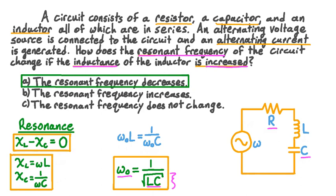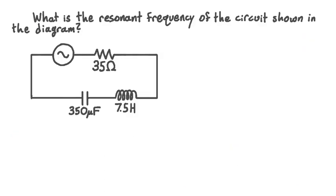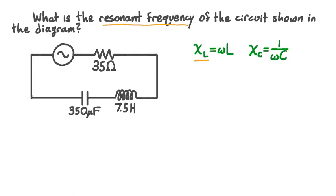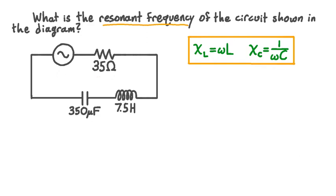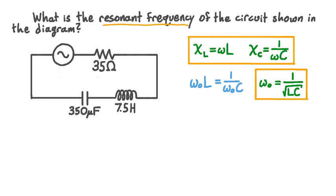Let's now work through a more quantitative example. What is the resonant frequency of a circuit consisting of an alternating voltage source connected to a series combination of a 35-ohm resistor, a 7.5-henry inductor, and a 350-microfarad capacitor? On resonance, inductive and capacitive reactances are equal: ω₀L = 1/(ω₀C). Solving for ω₀ gives the resonant angular frequency equal to 1 divided by the square root of the inductance times the capacitance.